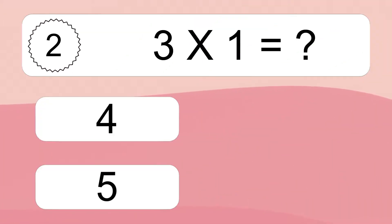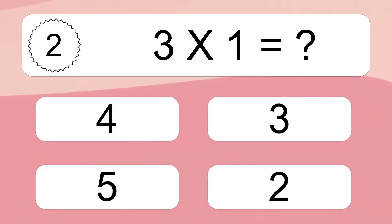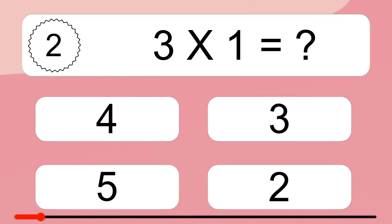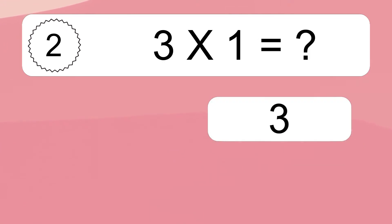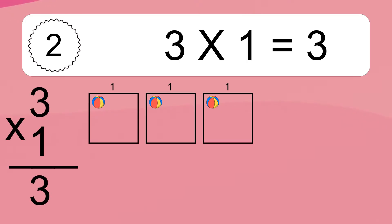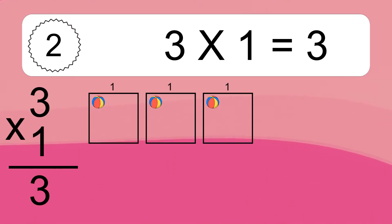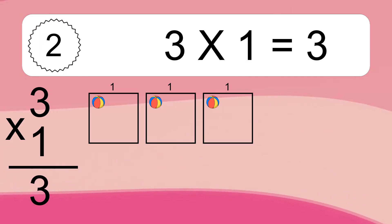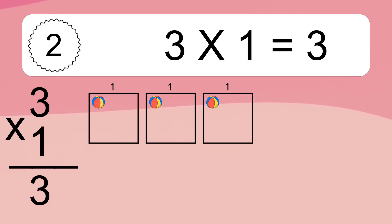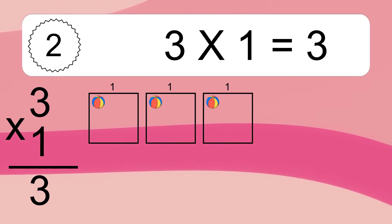Three times one equals what? Three times one equals three. We have three boxes and each box has one colorful ball inside. If you count all the balls in all the boxes together, you will have three times one balls. This equals three balls.